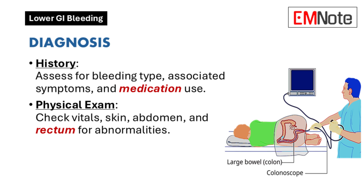The diagnostic process begins with a thorough history. Clinicians should inquire about rectal bleeding characteristics such as hematochezia and melena, and associated symptoms including hypotension, tachycardia, angina, syncope, weakness, or altered mental status. A history of gastrointestinal bleeding, abdominal pain, trauma, or changes in bowel habits should also be evaluated. Medications, particularly antiplatelet agents, non-steroidal anti-inflammatory drugs, and anticoagulants are important contributors.